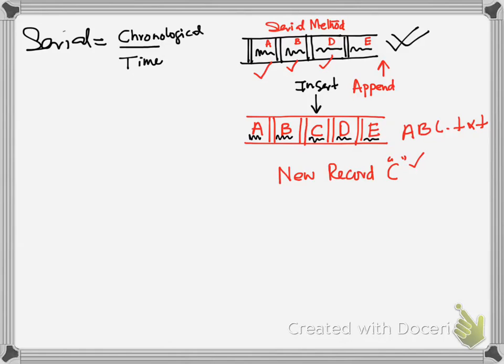So that is serial access method. But if we like to keep our data in order, then we would have to have this trouble to maintain order. We would have to insert. And in that case the data that we save would not be in chronological order. Rather it would be in some pre-decided sort order. And that would be called sequential file.